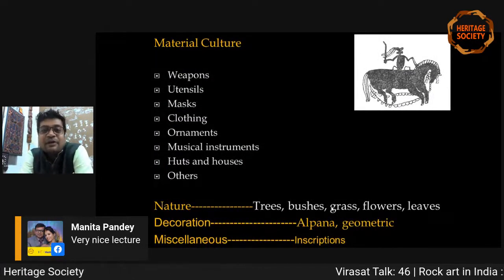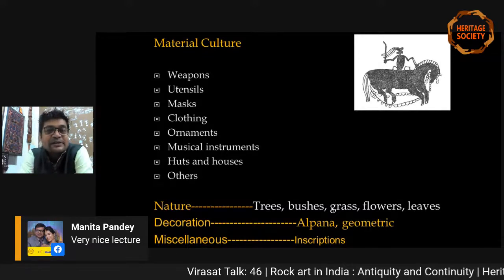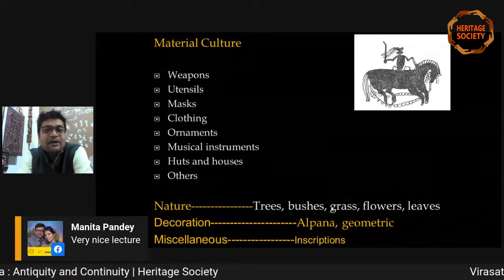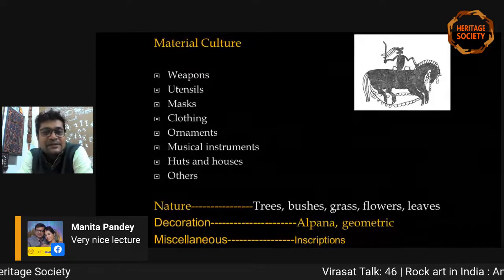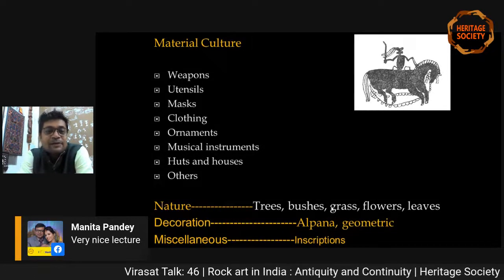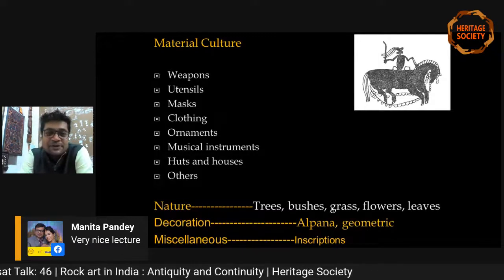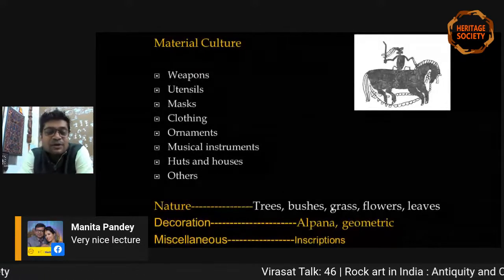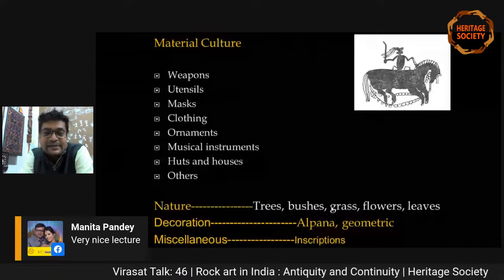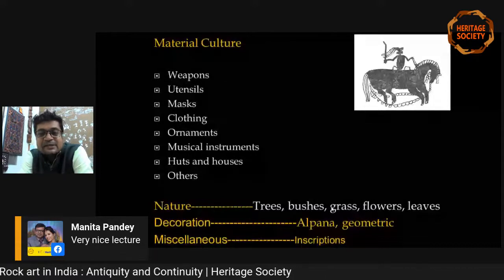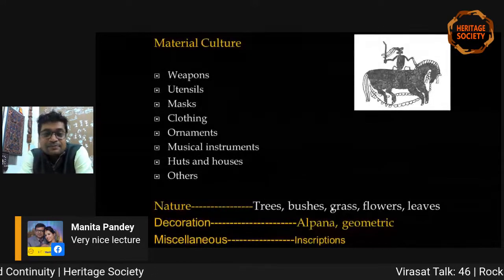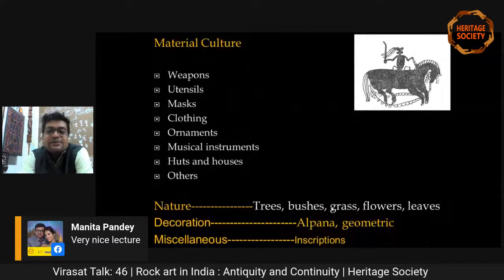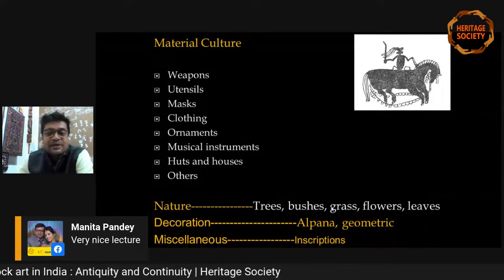Material culture has been depicted in numerous rock shelters, like Chaturbhujanatha Nala, Bhimbetka, Mirzapur, and many more rock art sites. They show varieties of weapons, utensils, sometimes masks, clothing, ornaments, musical instruments, herds, houses, and other material culture depictions. Nature is also a very interesting topic for those doing botanical and paleobotanical studies — several trees appear in rock art along with bushes, grass, flowers, and leaves. In later periods, alpana decoration, geometric motifs, and sometimes inscriptions that are both painted and engraved are found.